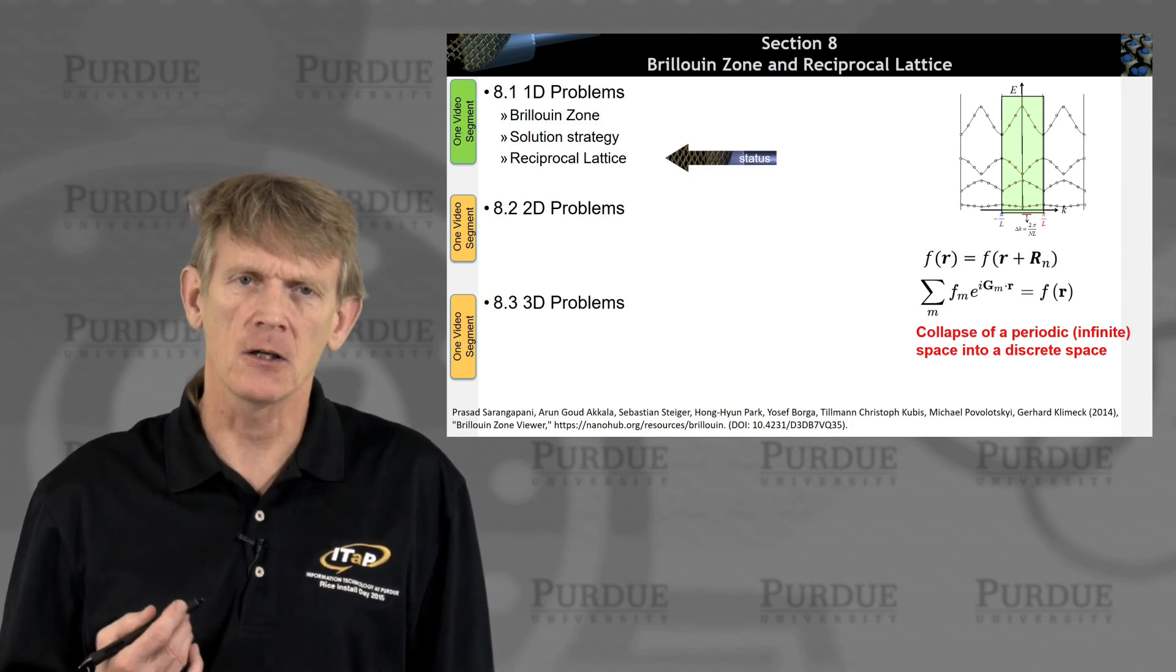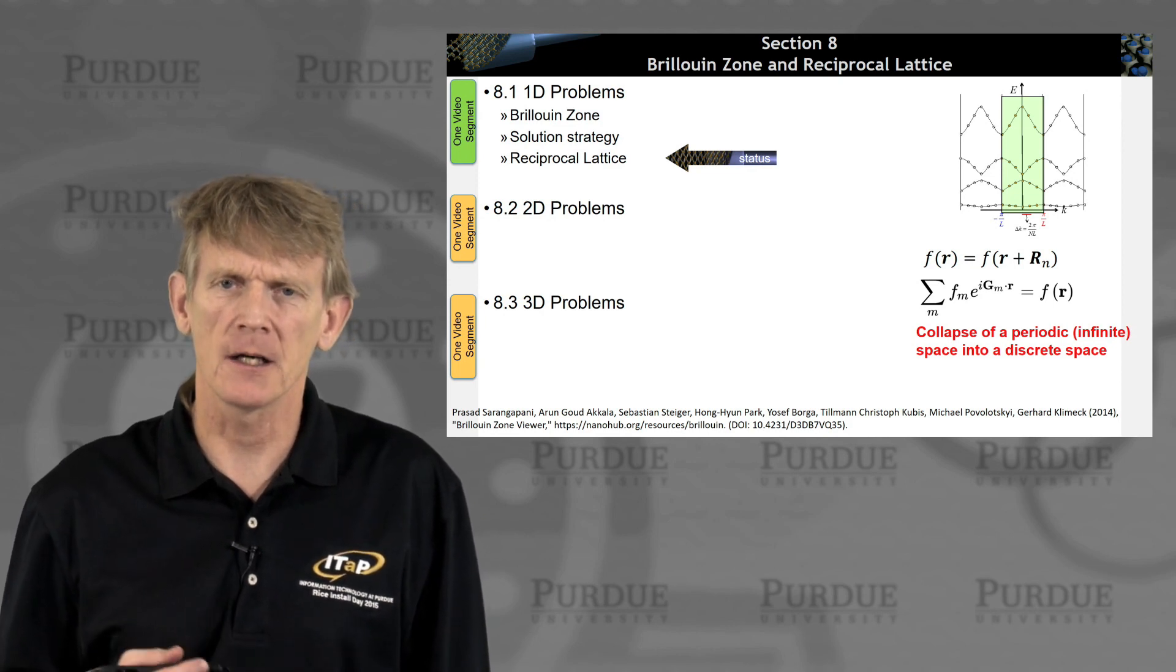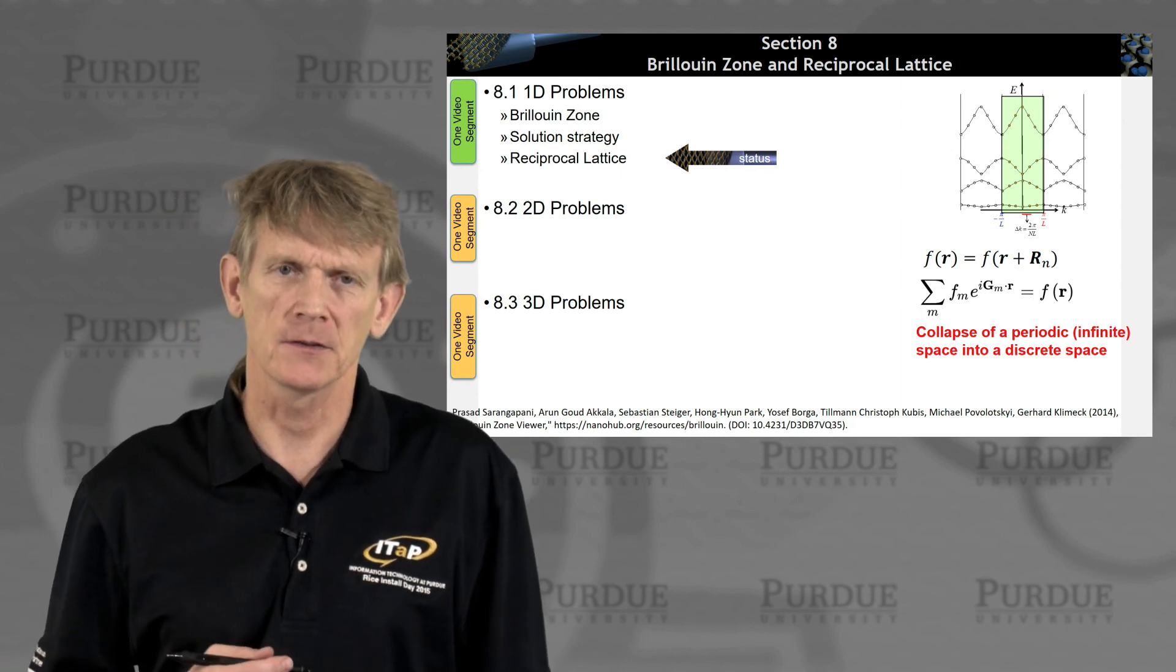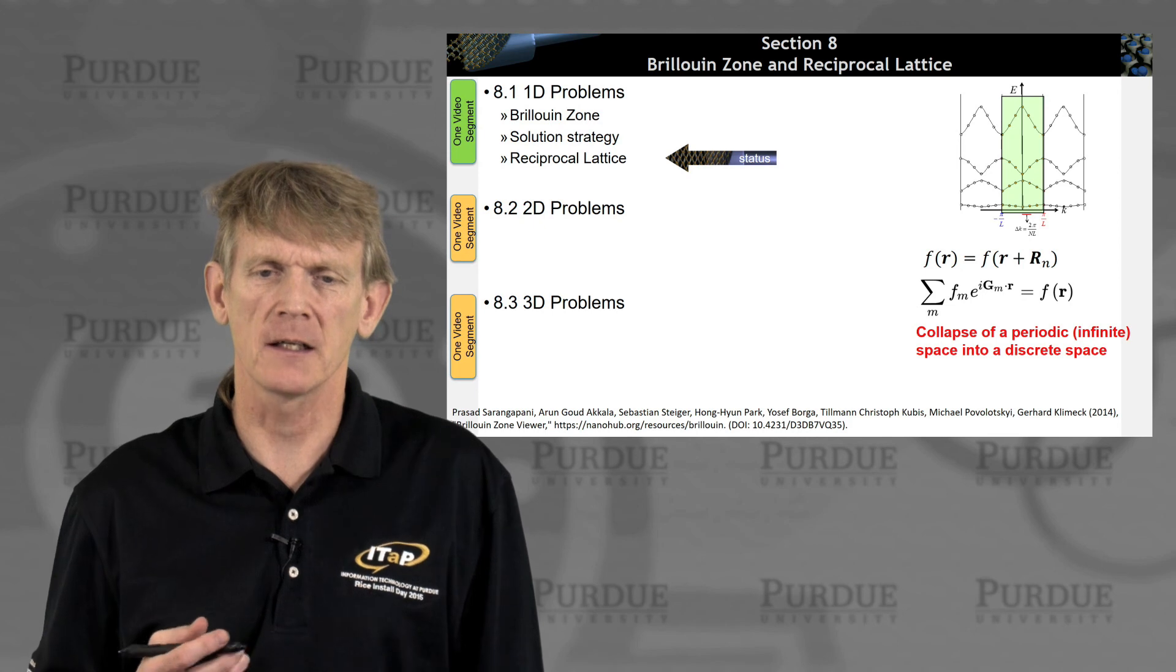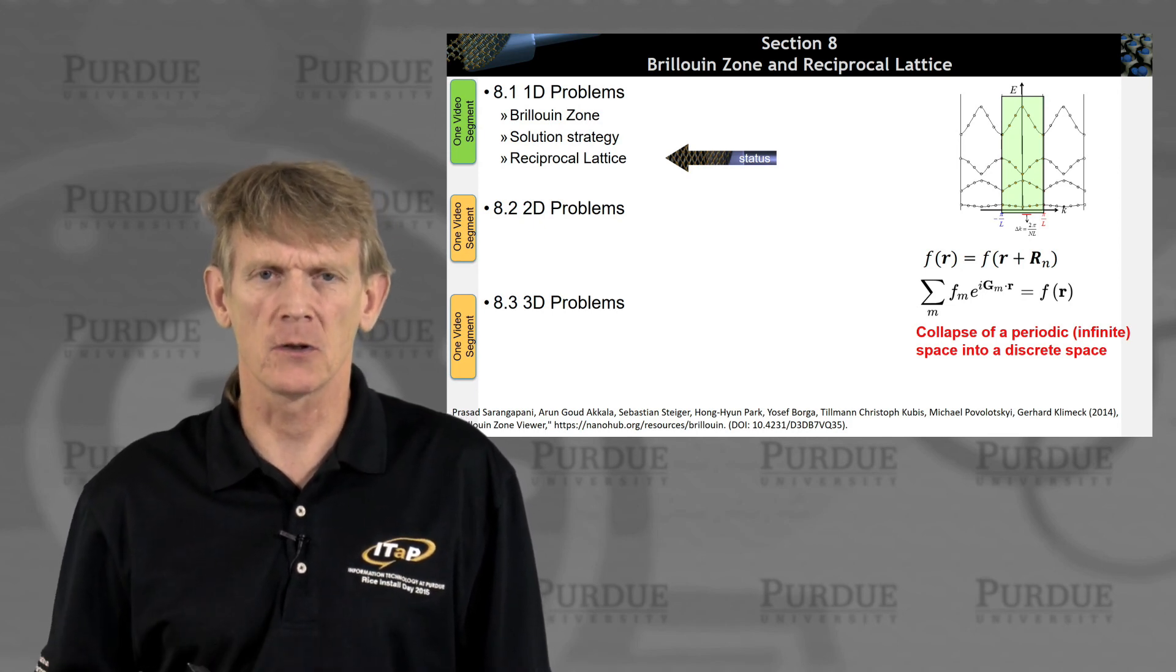So again, the key concept to take away is that we collapsed a periodic infinite space into a discrete space, and that discrete space allows us to look at a finite number of states, a finite number of spectral components.